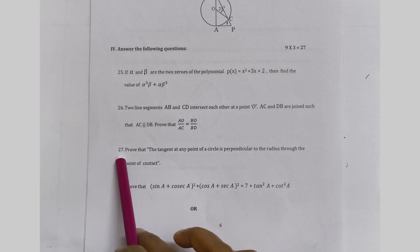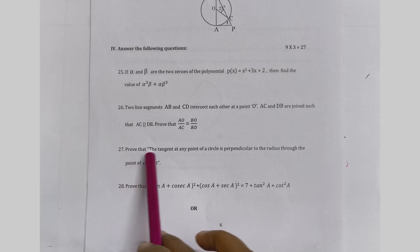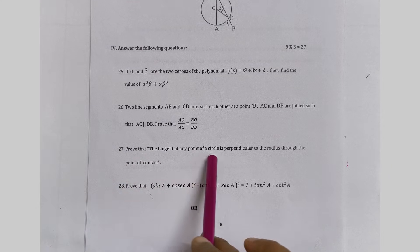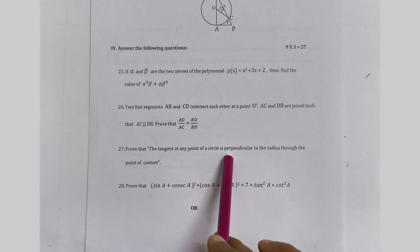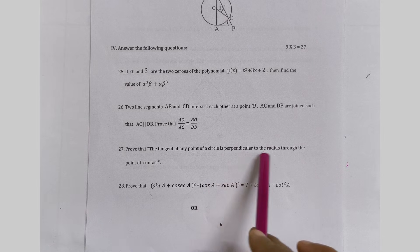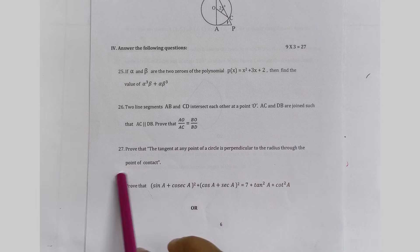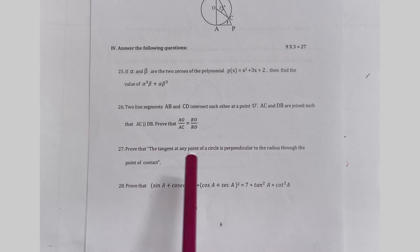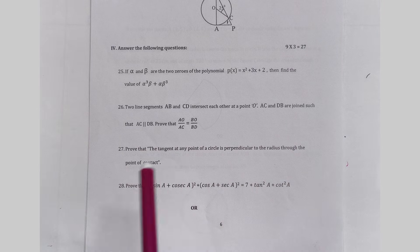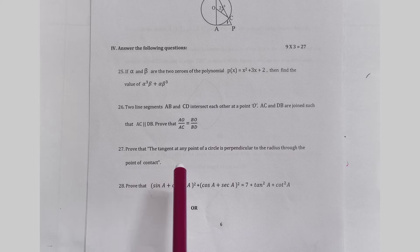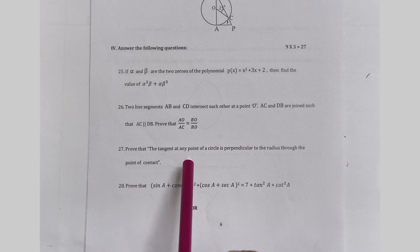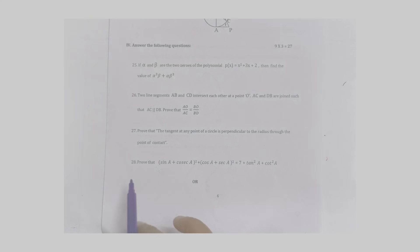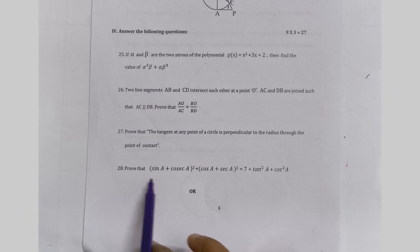Question 27: Prove that the tangent at any point of a circle is perpendicular to the radius to the point of contact. This is the circle chapter's first theorem and is a direct textbook question. A link will be given in the description where you can watch it.